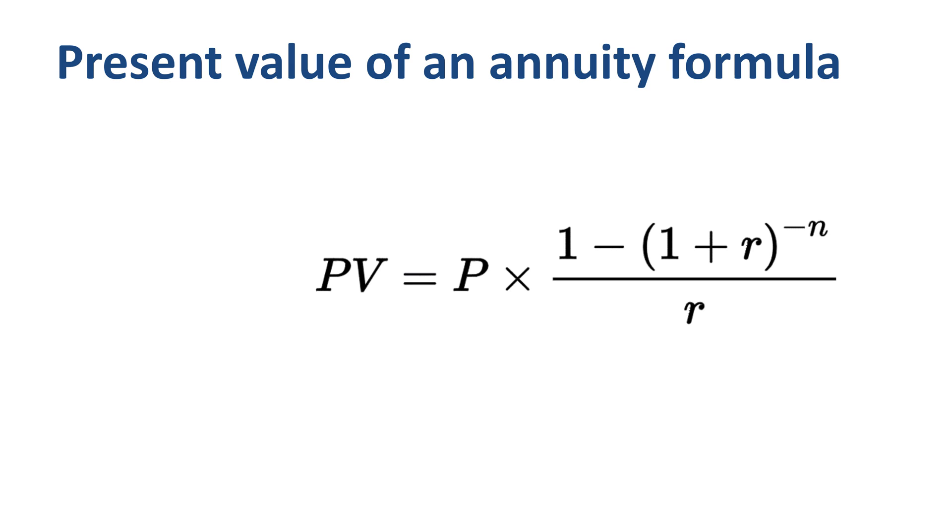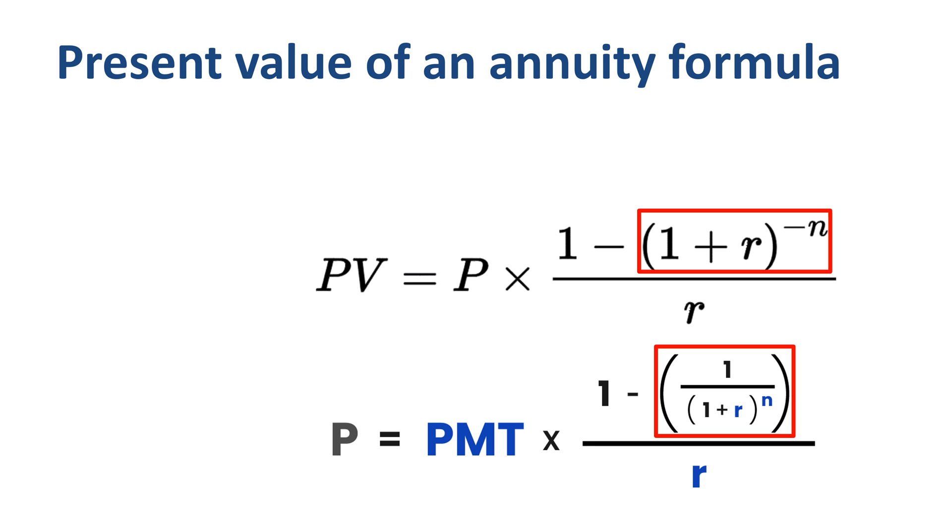Some of you might complain that the textbook you studied or the online resource you consulted had a different formula. It might state in the numerator of the equation, 1 minus 1 divided by 1 plus R to the power N. Raising something to the power minus N is the same as dividing by that same something to the power N.